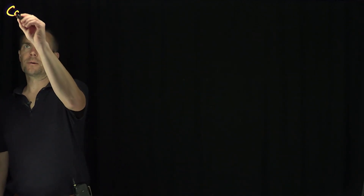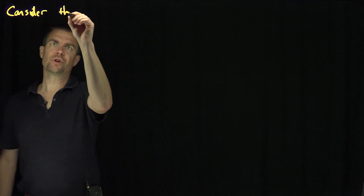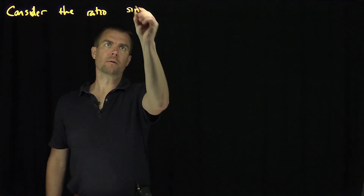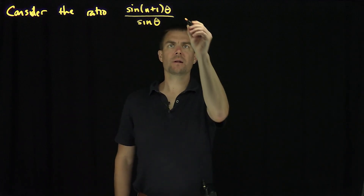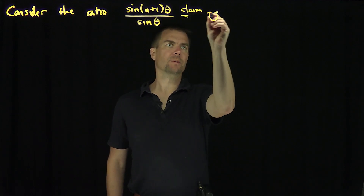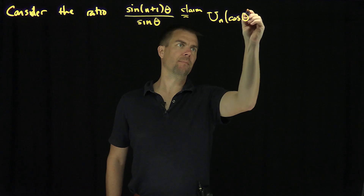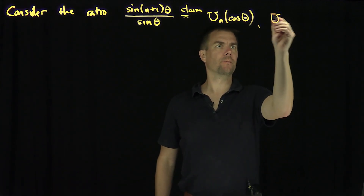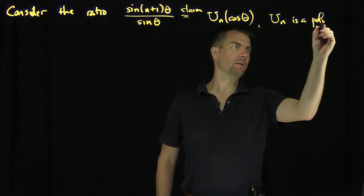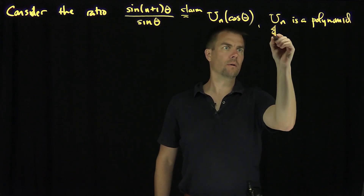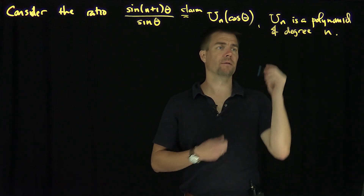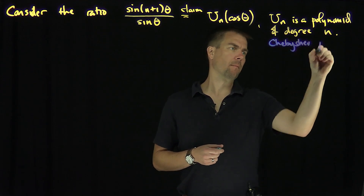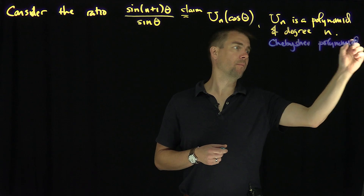Hello, students. In this video, we'll consider Chebyshev polynomials of the second kind. We're going to consider the ratio sine of (n+1)θ over sine of θ, and we claim that this is some function Uₙ of cosine θ, where Uₙ is a polynomial of degree n. This polynomial of degree n is called the Chebyshev polynomial of the second kind.